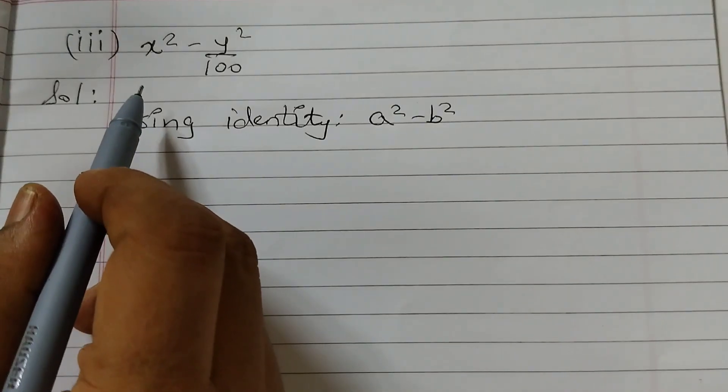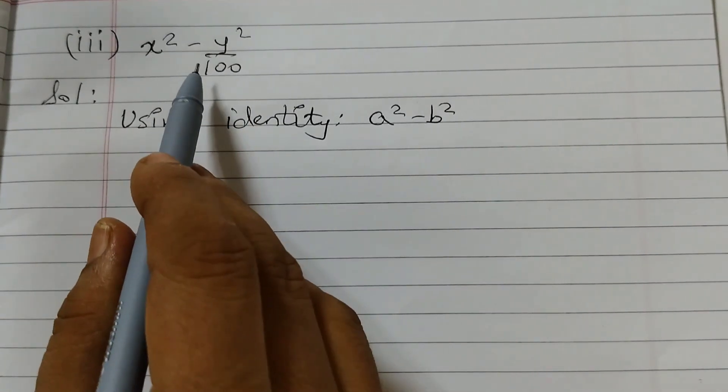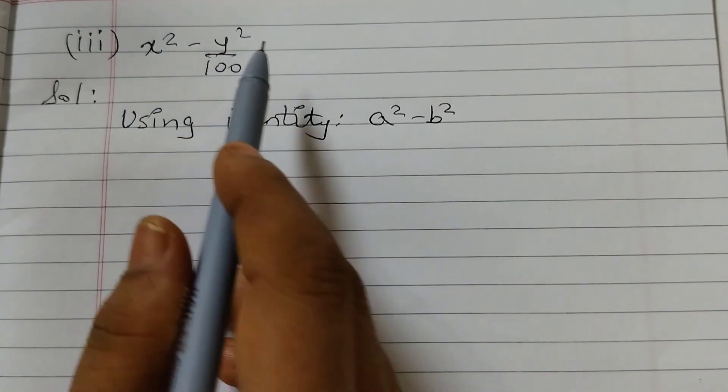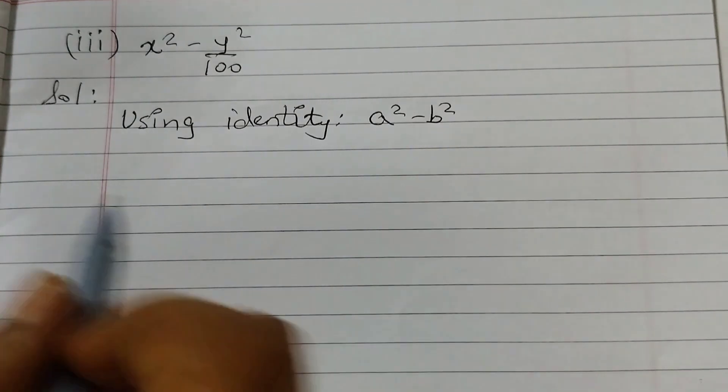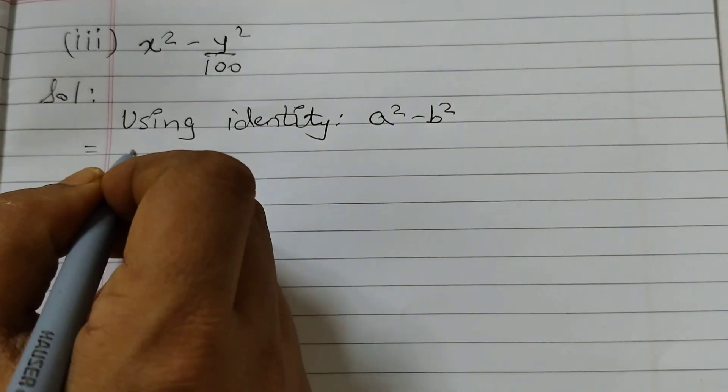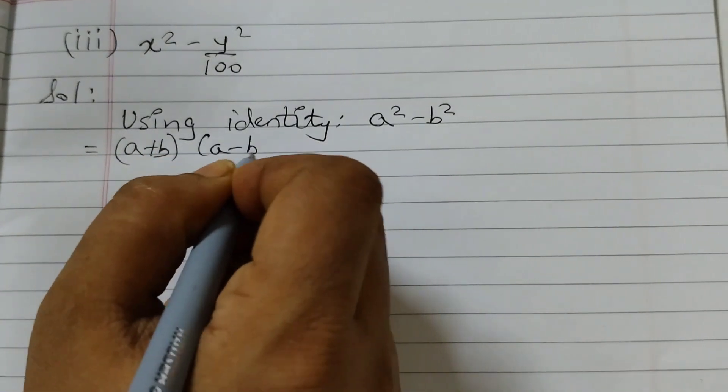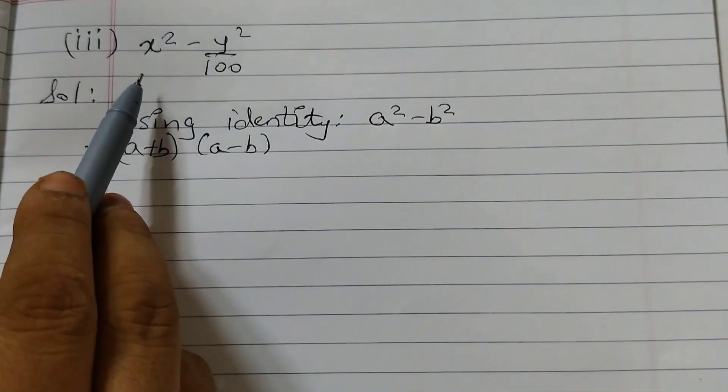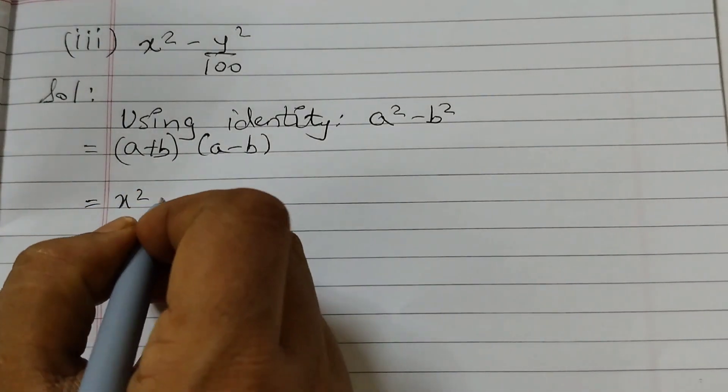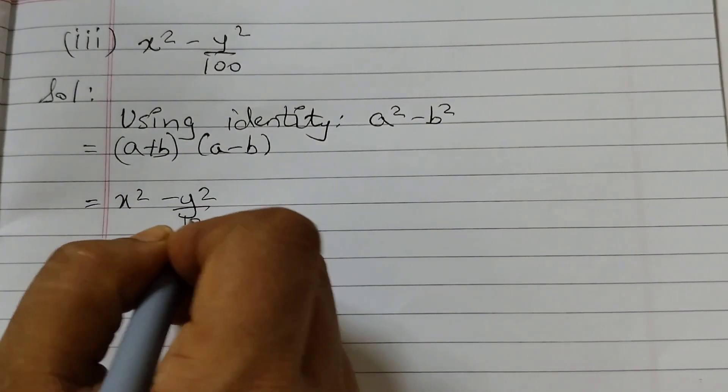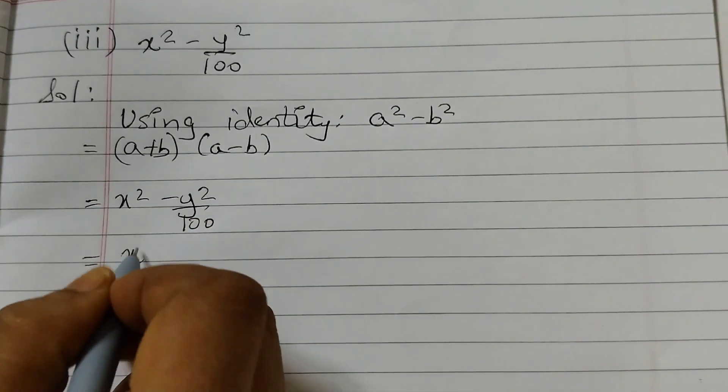Third and the last one: x squared minus y squared by 100. Here we got a minus sign and two squared terms. So we are going to use the identity a squared minus b squared which equals to a plus b into a minus b.